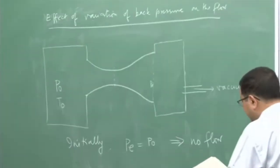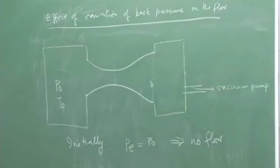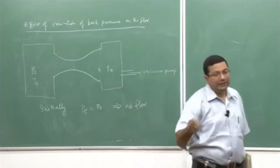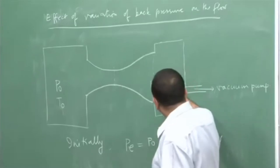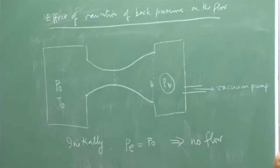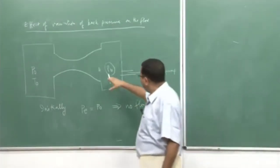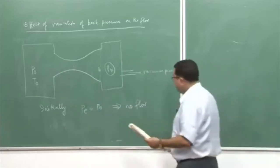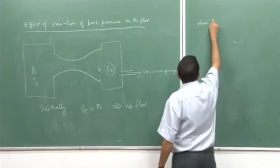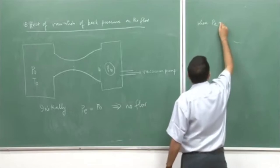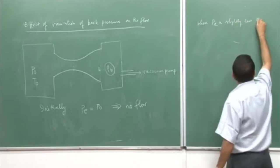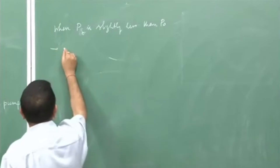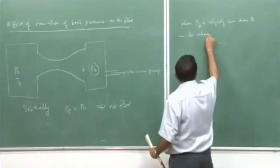Now let us start operating this vacuum pump and reduce the back pressure P_b. As P_b is reduced slightly below P₀, there is now a flow because P₀ is greater than P_b. When P_b is slightly less than P₀, we will create a very low subsonic flow through this nozzle.